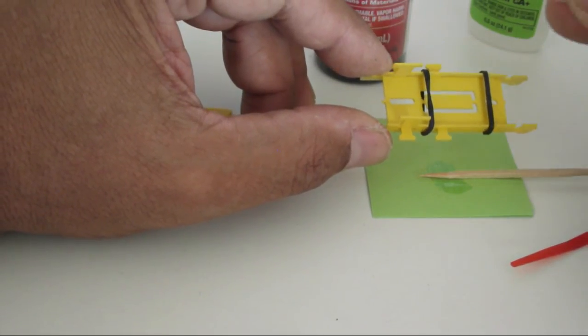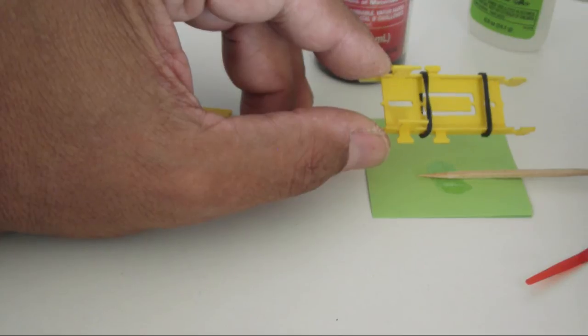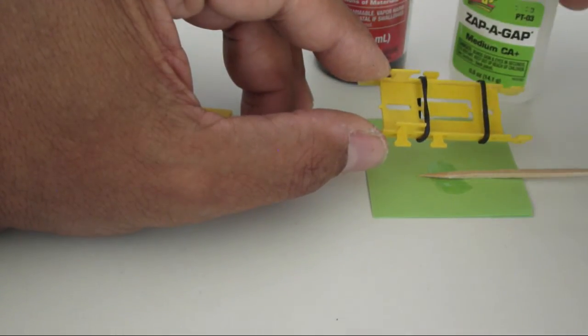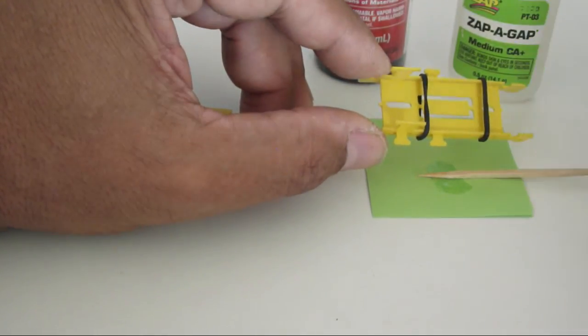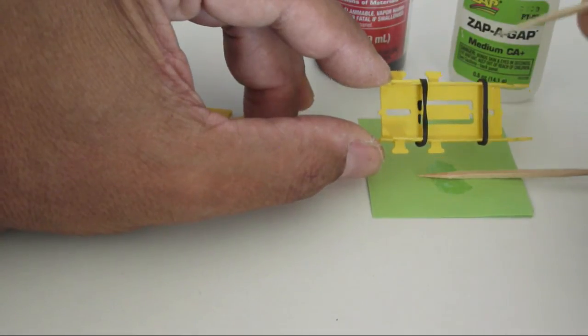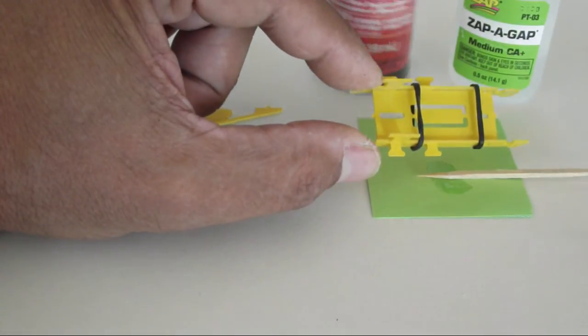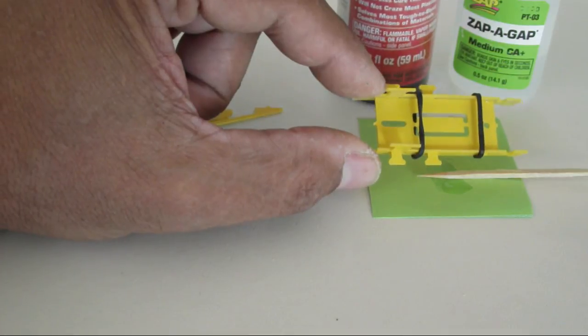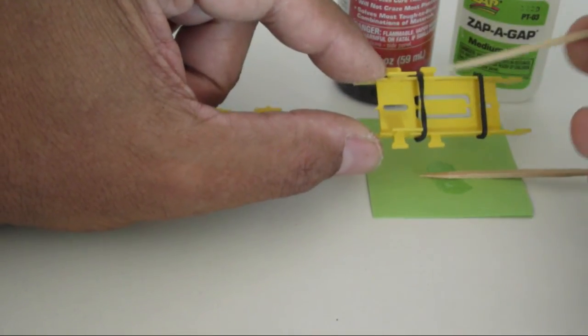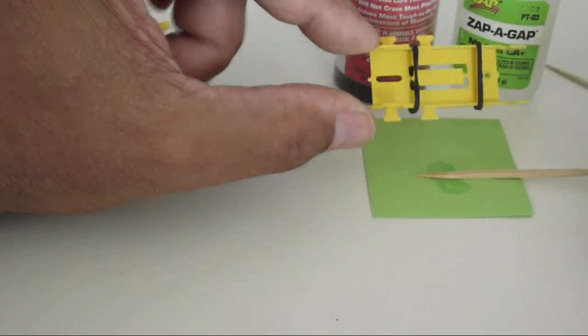And we highly recommend that you use the CA glue, this particular CA glue, which is a Zapp brand. It's a very high quality CA glue for this particular application. And we also use the same brand on the CA accelerator or zip kicker. So continue with that assembly using that process.